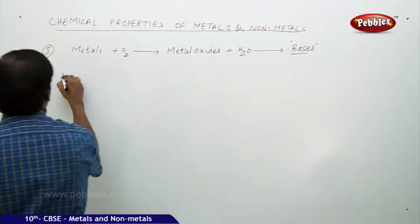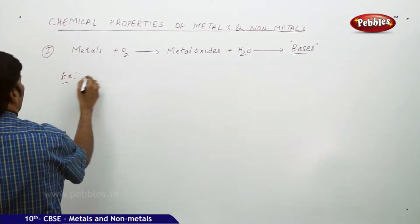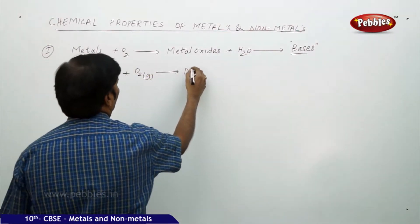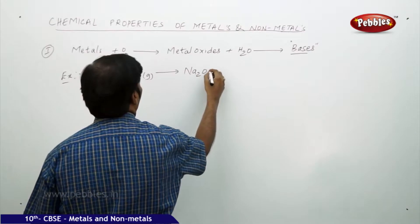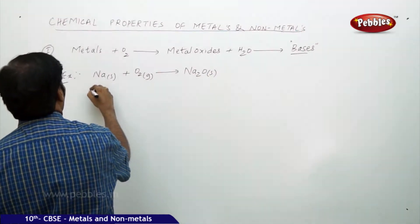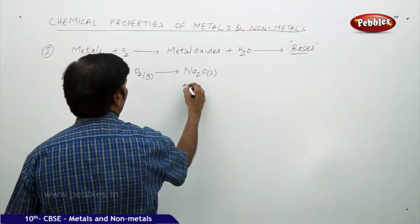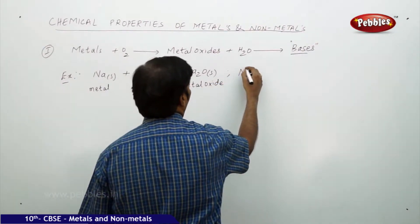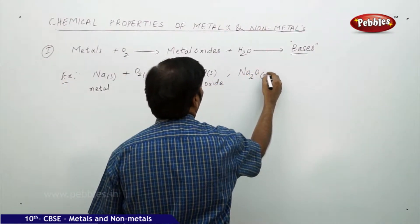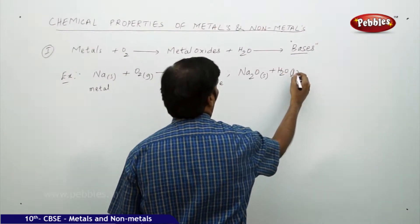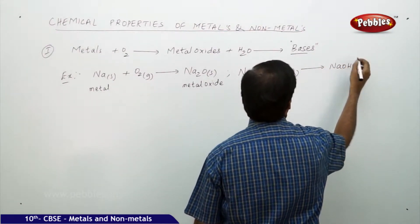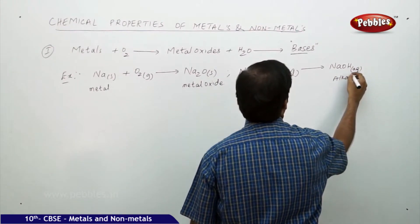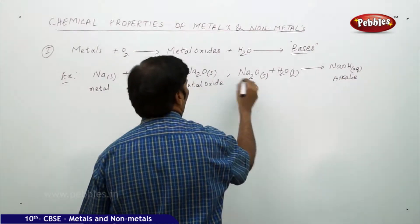For example, take sodium solid plus oxygen gas — this gives rise to sodium oxide solid. This is a metal and this is a metal oxide. Take this metal oxide Na2O solid and dissolve it in water — it forms sodium hydroxide, which is aqueous. It is an alkali or a base.